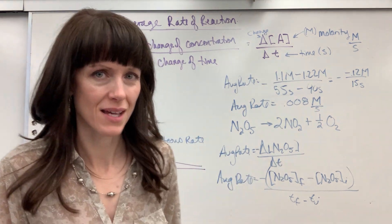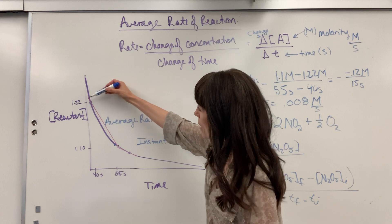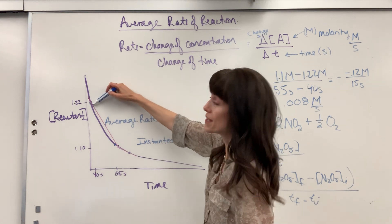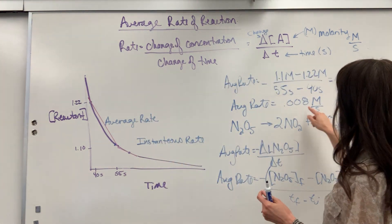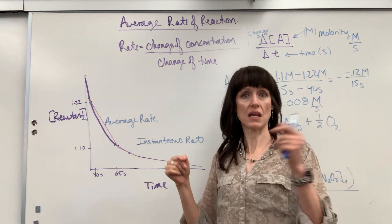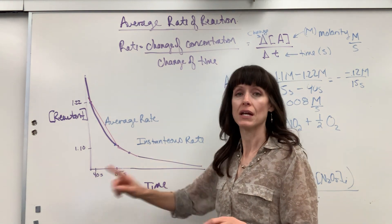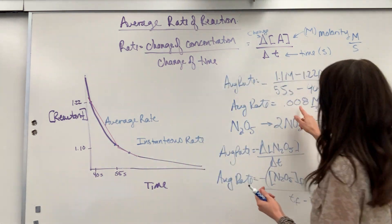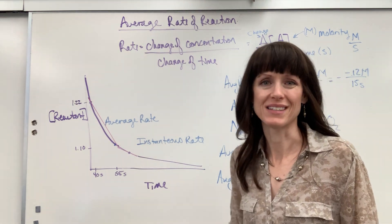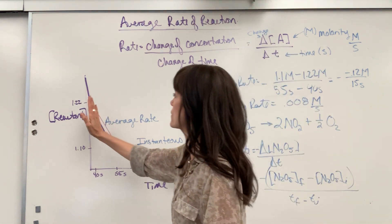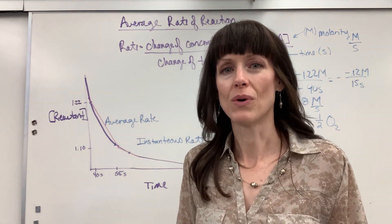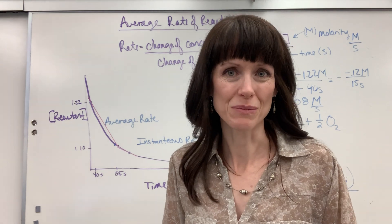So what does that tell us? That means going from 40 seconds to 55 seconds, for any given one-second interval in that range, 0.008 moles per liter of the reactant N2O5 have been consumed. On average, for every second across all 15 seconds from 40 to 55, 0.008 moles per liter are being consumed.